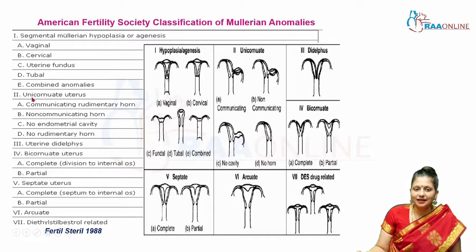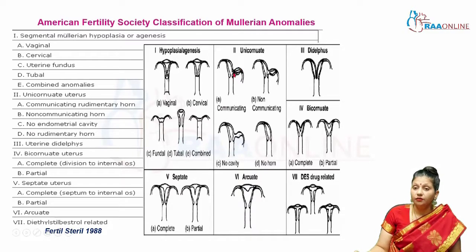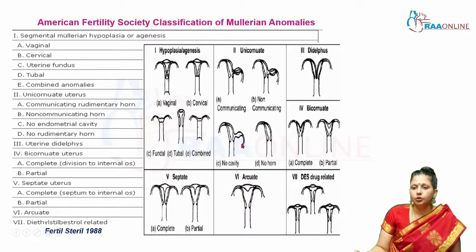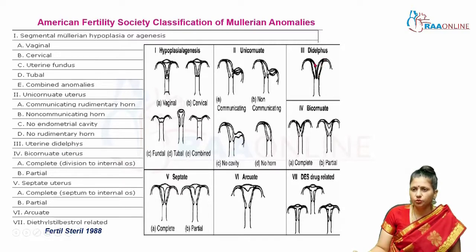Class 2 is the unicornuate uterus. Type 2A has a rudimentary horn with an endometrial cavity that communicates. Type 2B is a unicornuate uterus with a non-communicating rudimentary horn that has an endometrial cavity. Type 2C has a rudimentary horn with no cavity, and type 2D has no rudimentary horn. Class 3 is the uterus didelphys, in which there are two uterine horns formed when the Mullerian ducts fail to fuse in the midline.